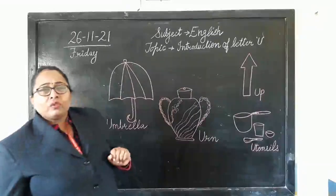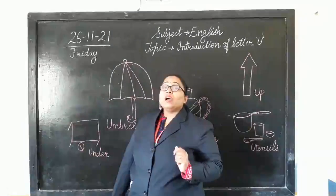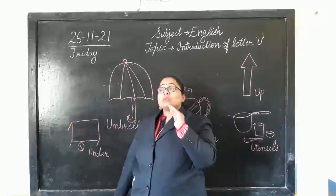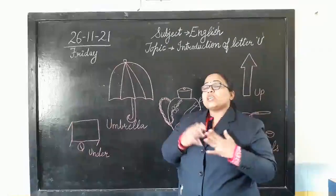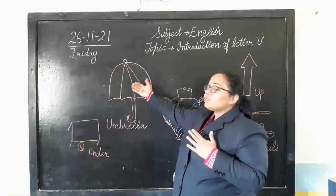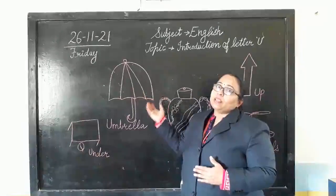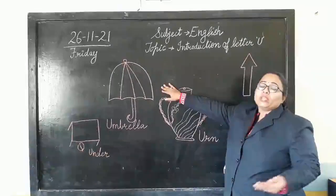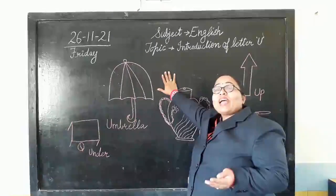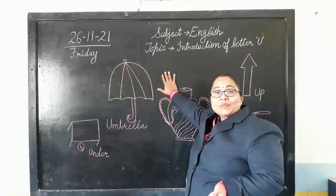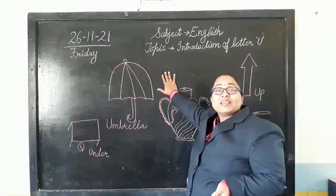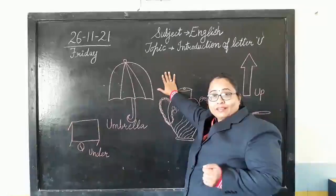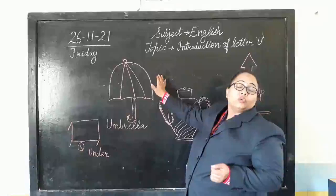Do you know when we use an umbrella? We use it in the rainy season, and also when it is very sunny and hot outside — to protect ourselves. So this is an umbrella. Now when you are saying umbrella, you must have understood what alphabet we are going to learn today. Today we are going to learn about alphabet U. U for umbrella.